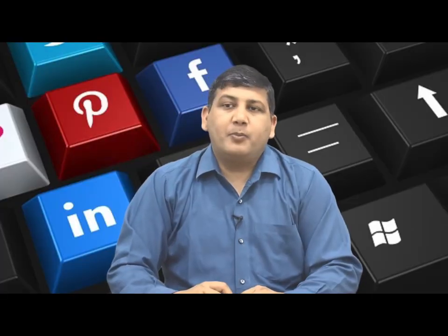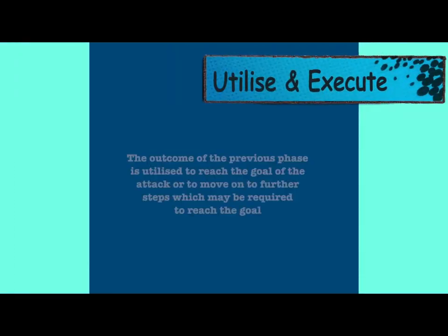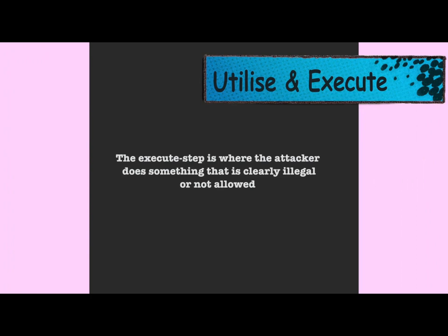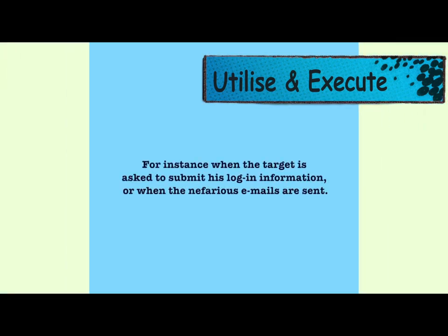The fourth step of the social engineering attack cycle is utilize and execute. The outcome of the previous phase is utilized to reach the goal of the attack or to move on to further steps required to reach the goal. The execute step is where the attacker does something clearly illegal or not allowed — for instance, when the target is asked to submit login information or when nefarious emails are sent.